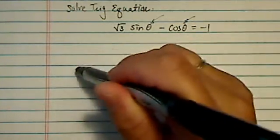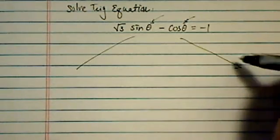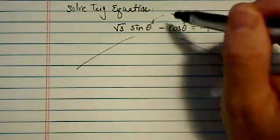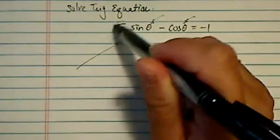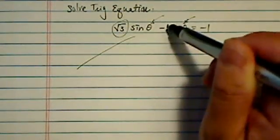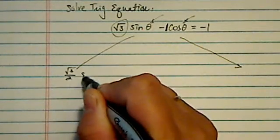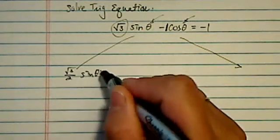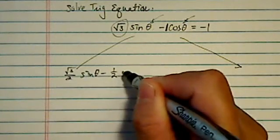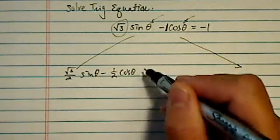Now, there are two methods or two general thoughts on solving this type of problem. One is that if you recognize this one and the coefficient of one here could be possibly tricked into a sine alpha plus beta.